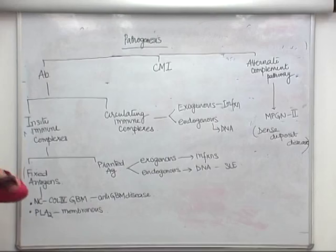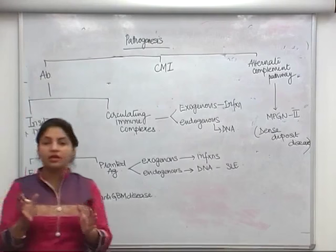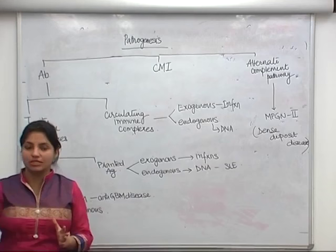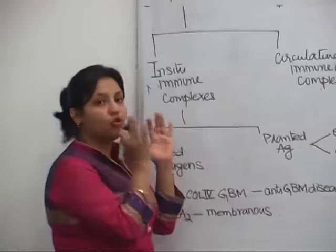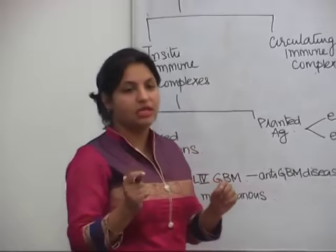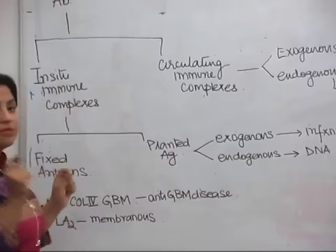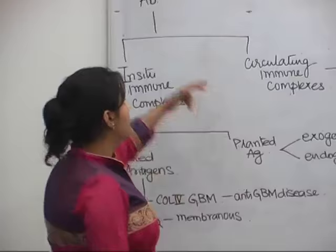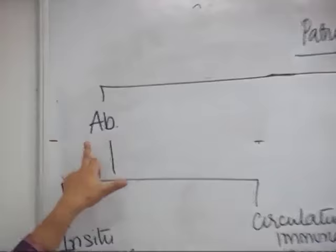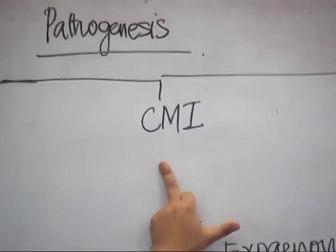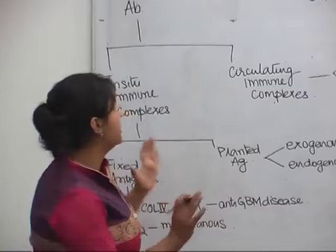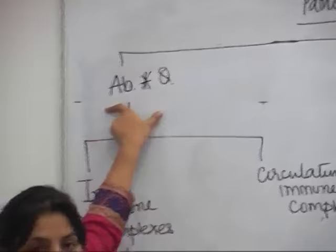Coming to the pathogenesis of glomerular diseases: in contrast to tubular diseases which are mostly mediated by toxins, infections, or vascular disorders, glomerular disorders principally occur due to immunological causes. The most common pathogenesis involves either antibody-mediated disease, cell-mediated immunity, or the alternate complement pathway. The most important of these is antibody-mediated disease.